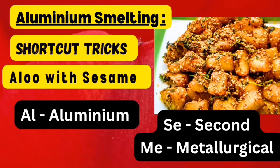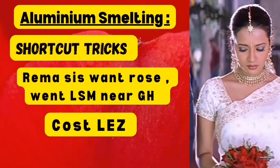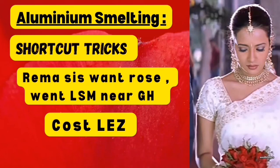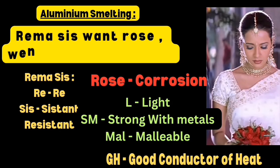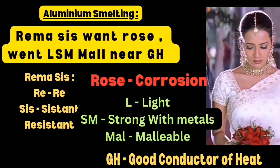Look at this image — she is Reema, she is an actress. Using her name you can study the next sentence. The shortcut is: Reema says want rose, so she went to LSM mall near GH, because the cost of the products is very less. Here, RE from Reema, then SIS, gives us 'resistant.' Then the word 'rose' represents corrosion — that is, aluminium is resistant to corrosion.